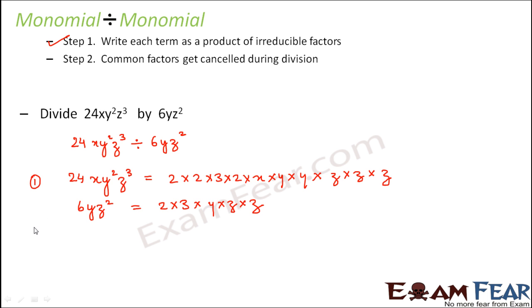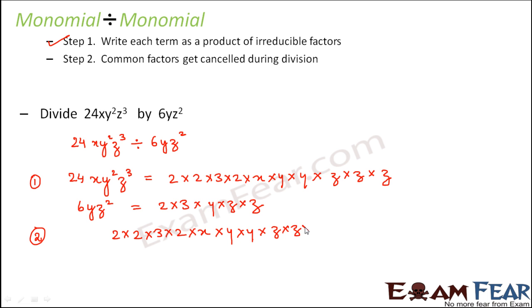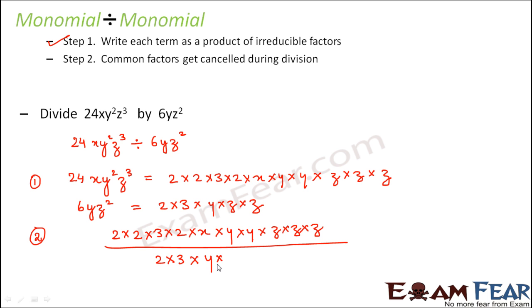Now let's do the proper division — that is step 2. We write the numerator 2 × 2 × 2 × 3 × x × y × y × z × z × z divided by 2 × 3 × y × z × z. We know that if you divide a number by the same number, you get 1.